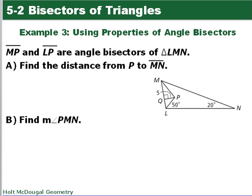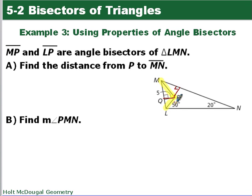Here's an example. MP and LP are angle bisectors, and we want to find the distance from P to MN. The distance is a line from P that is perpendicular to MN. The incenter theorem says the distance from the incenter to any side is always the same. Since QP — the distance from P to ML — is 5, the distance from P to MN is also 5.